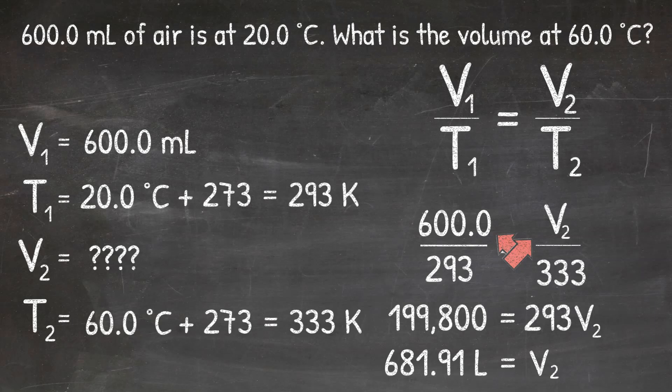When we think about this in terms of Charles' law, this answer should make sense. I'm looking at a temperature going up from 20 to 60 degrees, and Charles' law tells me if the temperature increases, the volume will increase as well. And I see that in this problem — I started with a V1 of 600, and I ended with a V2 that is higher at 681.91 milliliters.